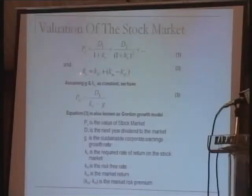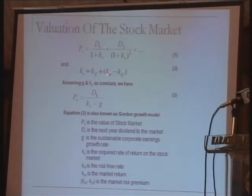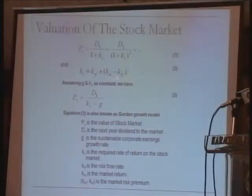Basically this equation says that the return the investor expects consists of the risk-free rate, which historically has been 10% — though it has gone up to 12% or 13%. If you look at the 10-year PIB rate today, it's about 13%, but historically over a longer period it has been about 10%. The risk premium, K minus KRF, is the difference between the return on the stock market and the risk-free rate — about 8%.